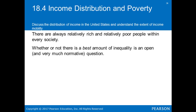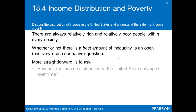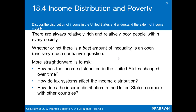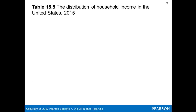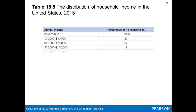Now we'll discuss income distribution and poverty — a very heated topic, discussed here in economic terms. There are always relatively rich and relatively poor people within every society. Whether there is a vast amount of inequality is a normative question. More straightforward questions are: how has income distribution in the United States changed over time, how do tax systems affect it, and how does U.S. income distribution compare with other countries? The distribution of household income shown here is based on 2015 data from the Urban-Brookings Tax Policy Center.